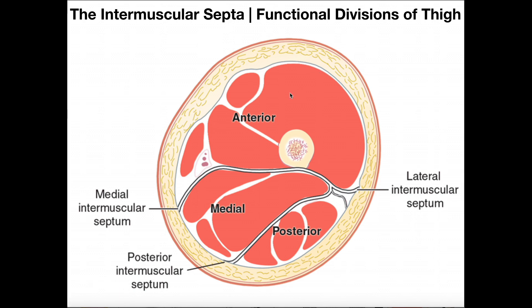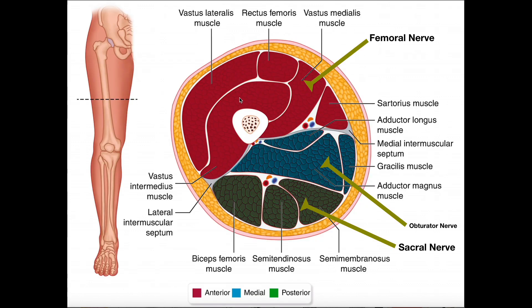So: anterior — knee extensors; medial — hip adductors; and posterior — knee flexors and hip extensors. Here in the anterior part in red, we have quadriceps femoris — these are our knee extensors. Medial is flipped over to this side this time; in blue we have our medial compartment, which would be the hip adductors.